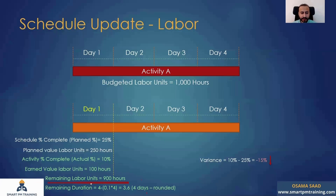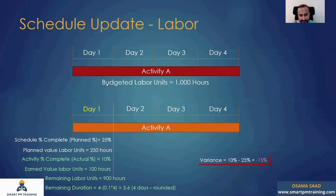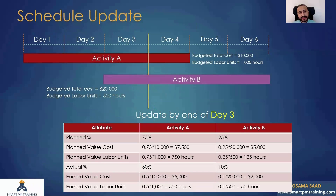Remaining labor units and remaining duration work the same way. The variance is still the same — 15% — because it's the same activity and same progress, just measured by two different parameters.